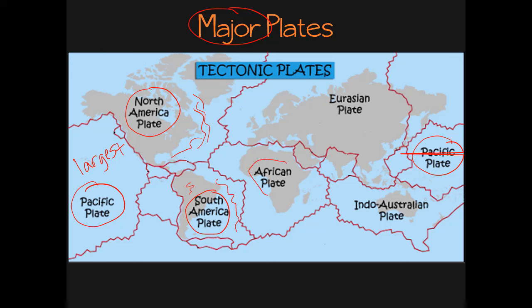Same with the African Plate — here it holds the continent of Africa, but you can see it's got parts of the Atlantic Ocean to the west and the Indian Ocean to the east, so again continental and oceanic crust. The Indo-Australian Plate is named because it contains the continent of Australia as well as India. So this is going to be continental crust, but then here's the rest of the Indian Ocean, so the Indo-Australian Plate actually has a lot of oceanic crust that it's holding. And finally, up here we have the Eurasian Plate, which holds the continents of Europe and Asia. This is mostly continental crust — it's a very large continent — though it does contain a little bit of oceanic crust underneath the Atlantic Ocean.